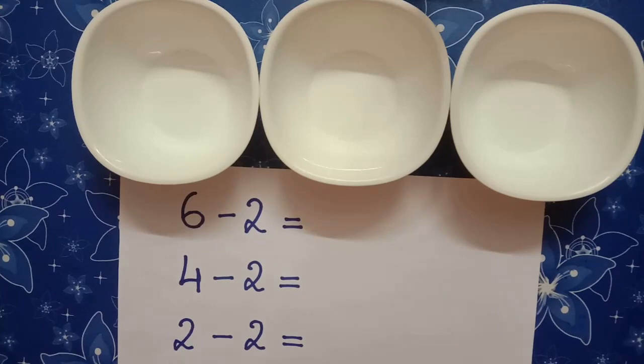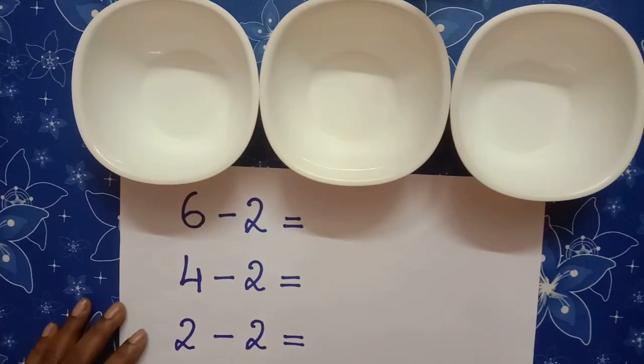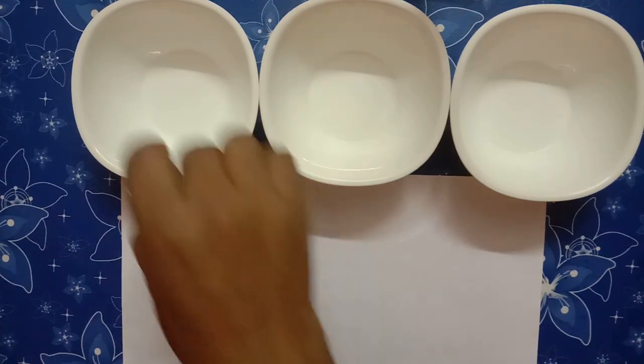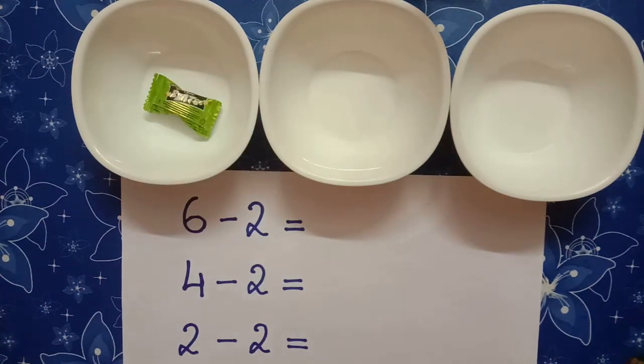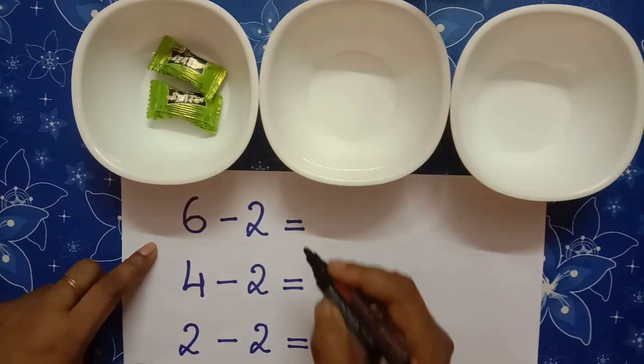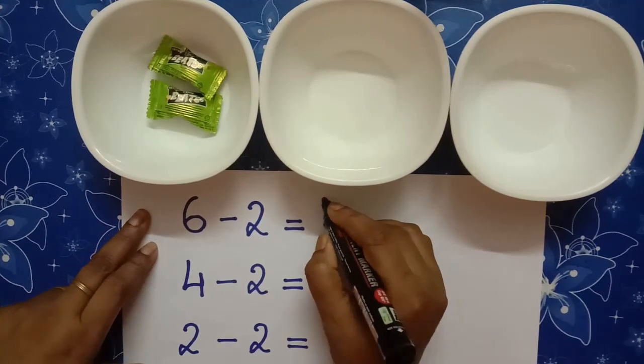Now, Anu had 6 sweets. She placed 2 sweets in a first bowl. 1, 2. So, after subtracting 2 from 6, how much we are getting? We are getting 4.